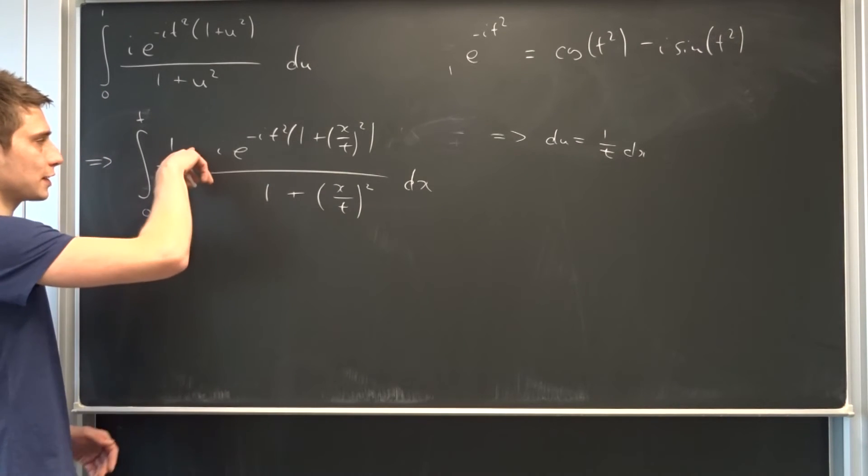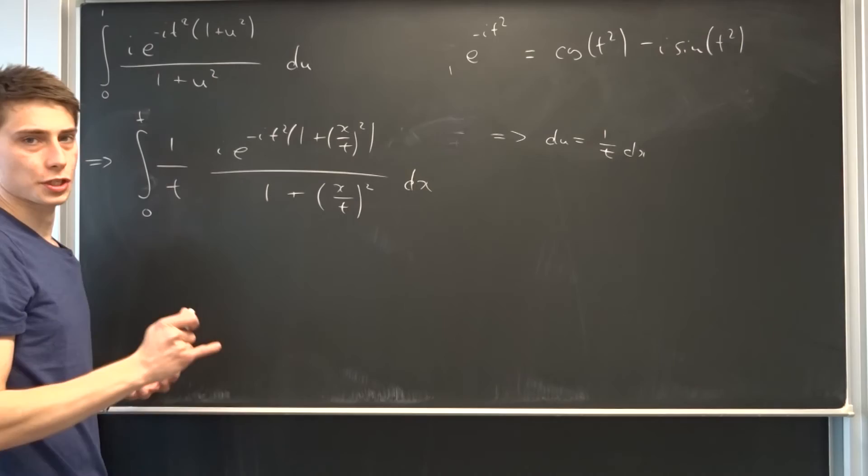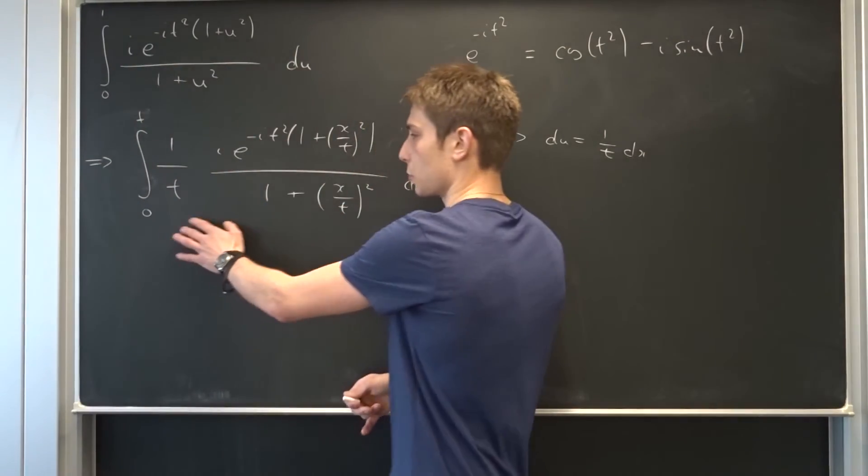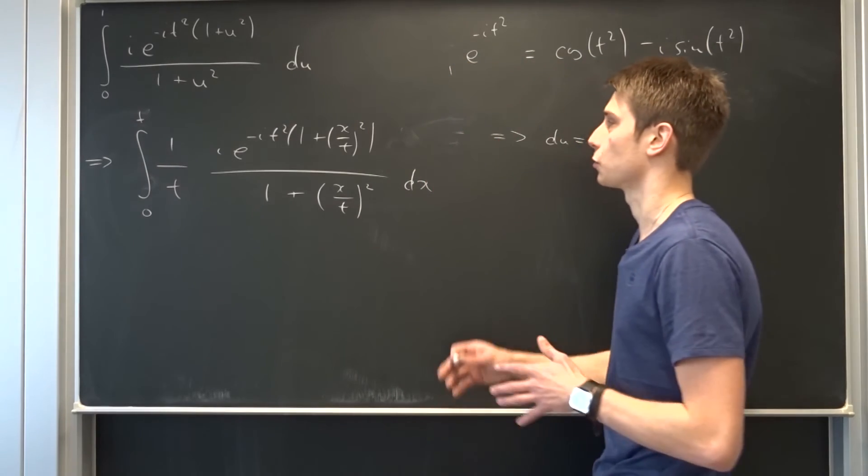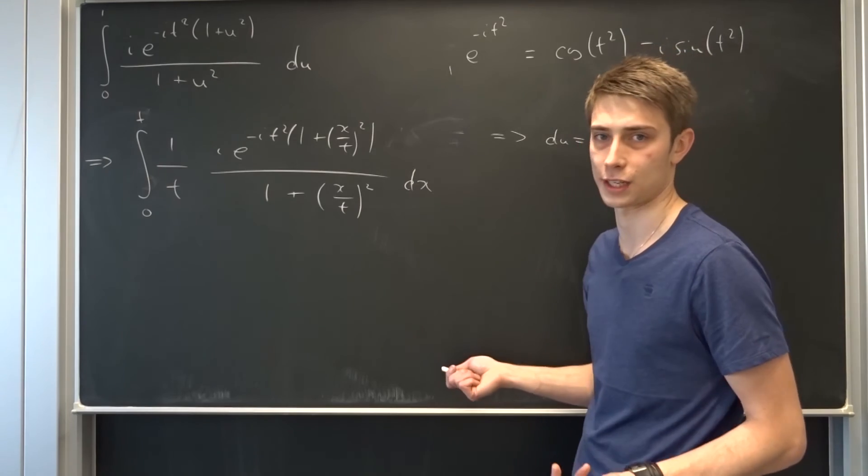So the good thing is we've got this 1 over t term right here. So if we let this whole thing approach infinity, then it's 1 over infinity and that's 0, so this whole integrand would vanish after we plug in our original substitution, and this fixes the whole problem.